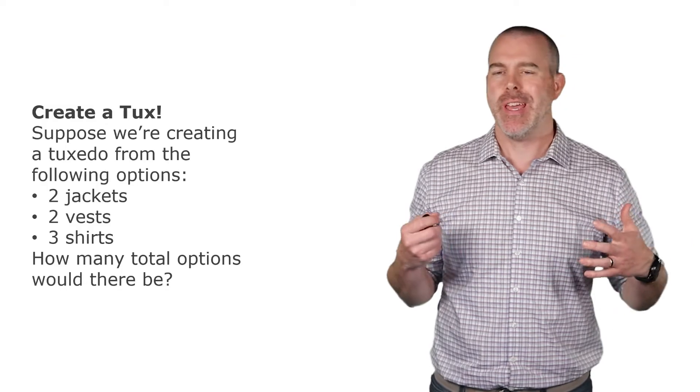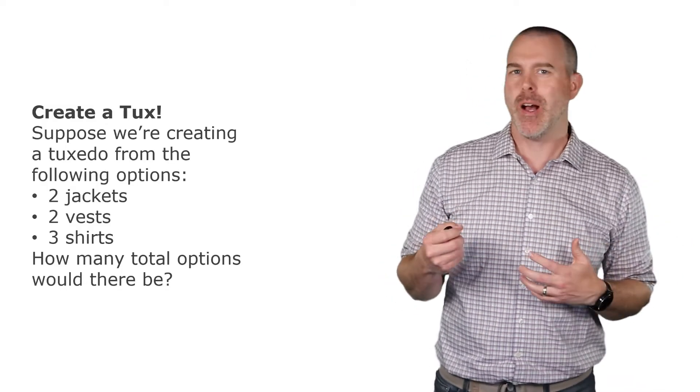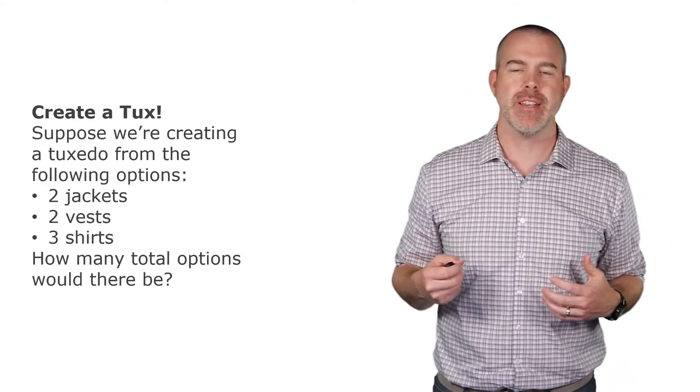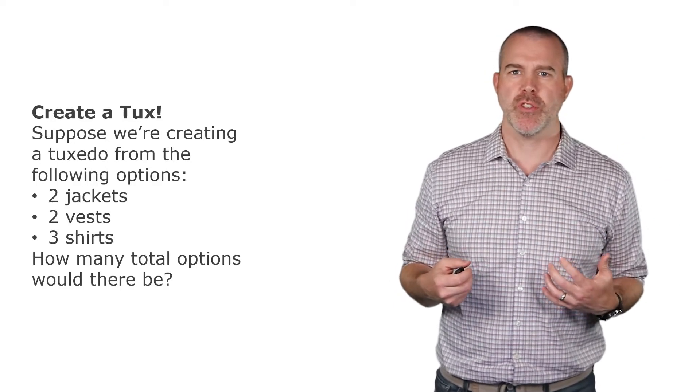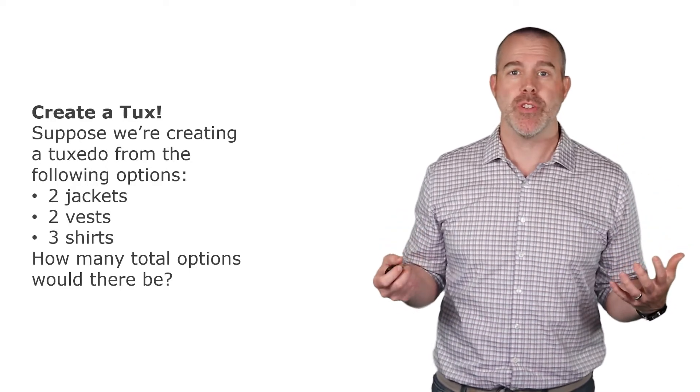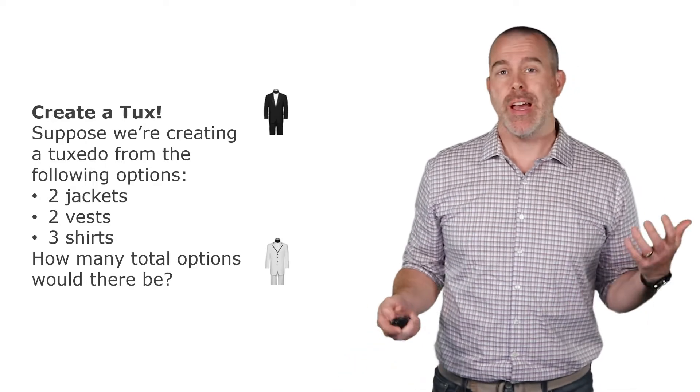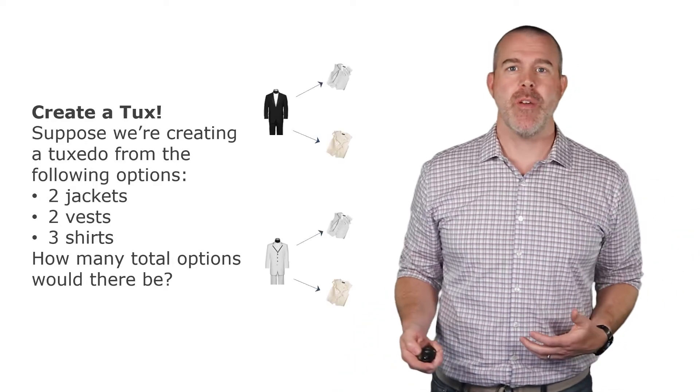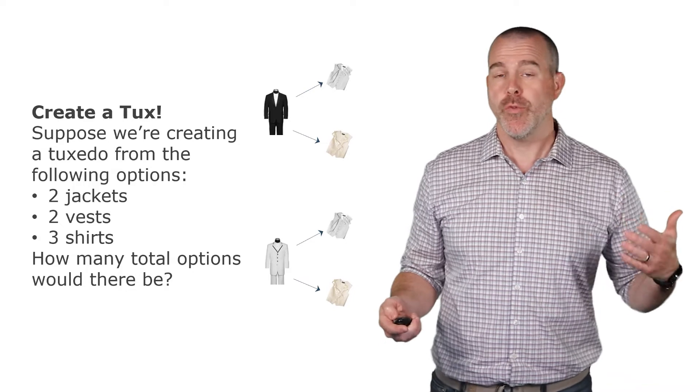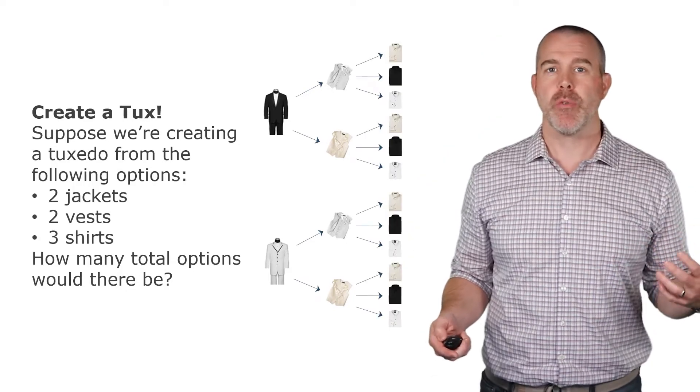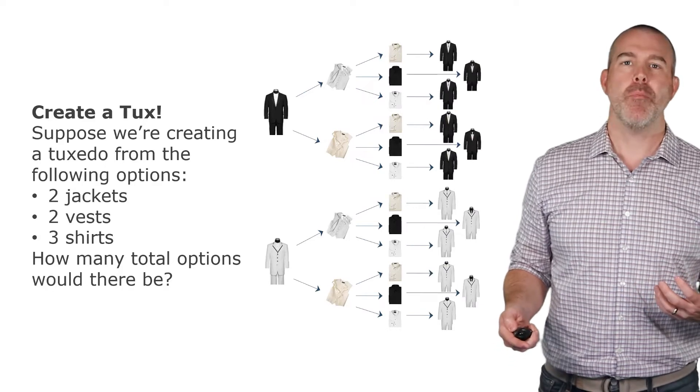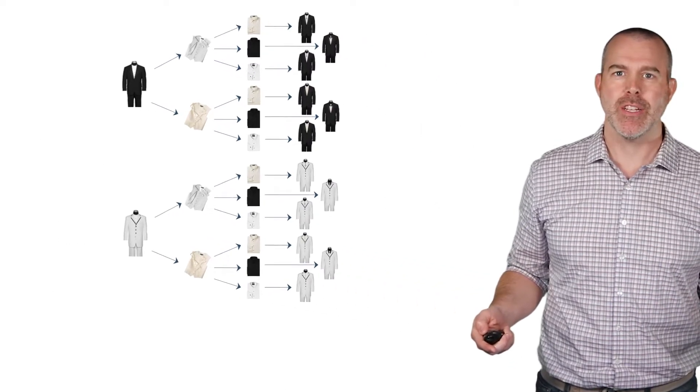Suppose you want to create a tux and you're looking at different options. You've got different jackets, maybe a couple different jackets, a couple different vests, maybe three different colored shirts or styles of shirts. You want to know how many different possible options are there. Well, in this case, you've got two different jackets. You have two different types of vests for each type of jacket. And then for each of those two combinations, you have three different shirts. So you end up with 12 different combinations.